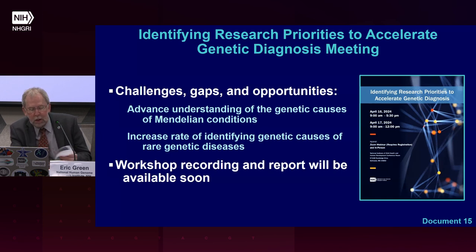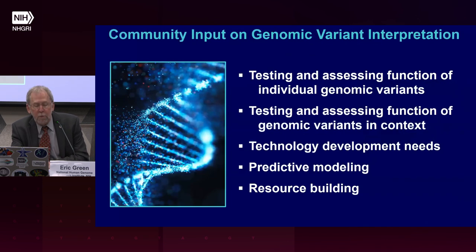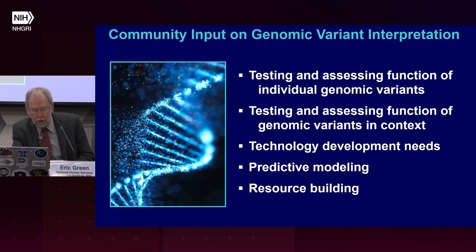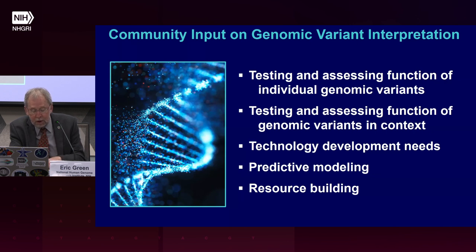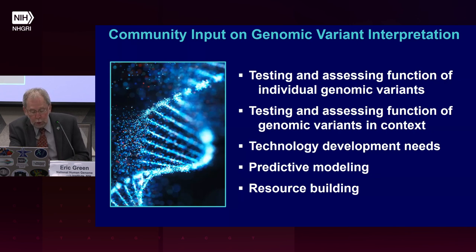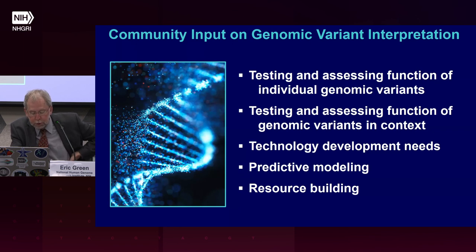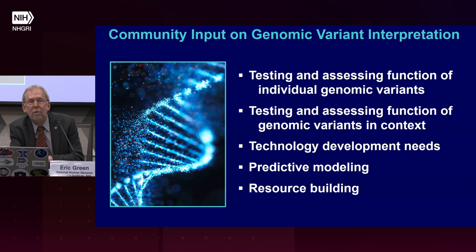The workshop recording and report will be available soon on genome.gov. From February to April, NHGRI sought input from the scientific community about future research directions toward understanding the effects of genomic variants on genome function. External scientists provided written feedback and participated in virtual panel discussions on topics including testing individual genomic variants, testing genomic variants in context, technology development needs, predictive modeling, and resource building. The community feedback will be used to identify gaps, opportunities, and challenges for NHGRI to support research — both short-term and long-term — and a written report of the feedback was just posted on genome.gov.